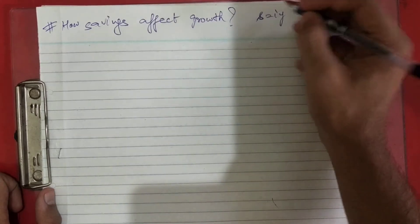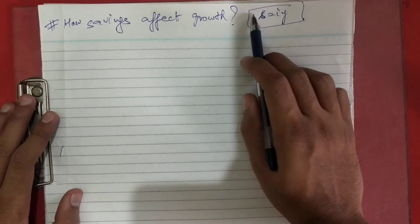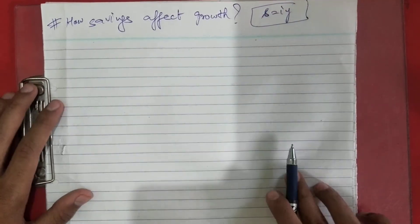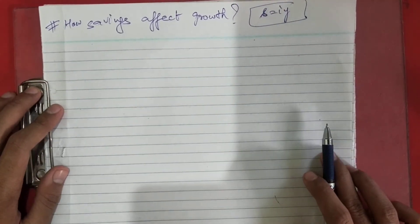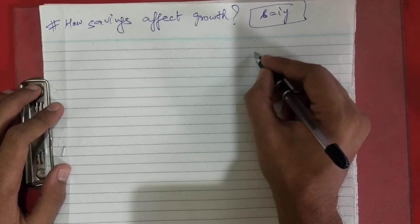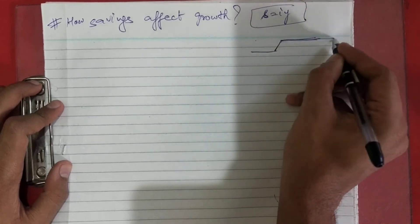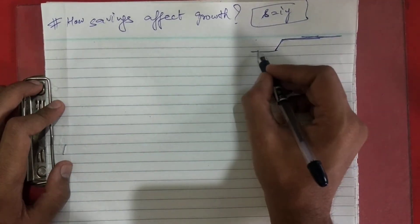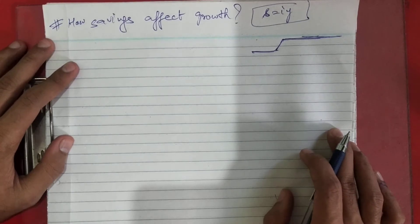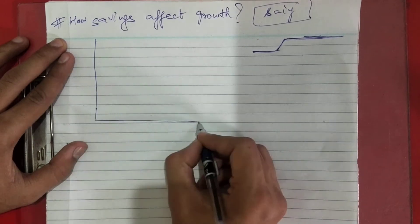You can see the direct relation from this equation. If the saving rate is low, investment is low and capital stock will decrease. But we have to see whether it is a real growth effect or just a temporary level effect. Level growth is like this: it grows for some time and then becomes the same again. You can remember this diagram for level growth.